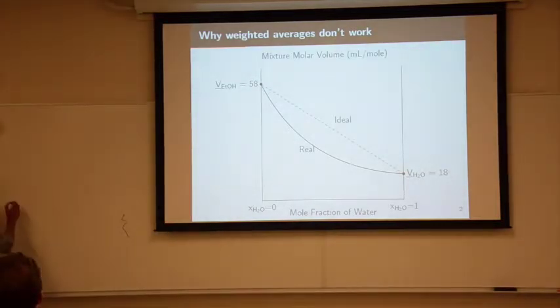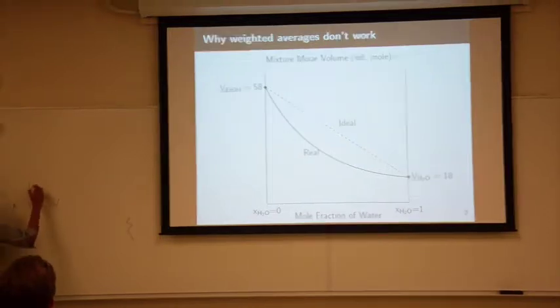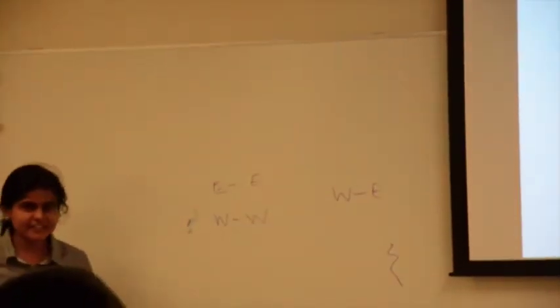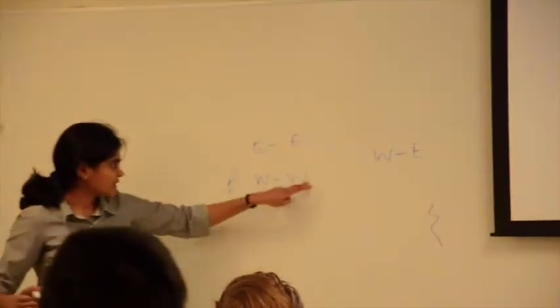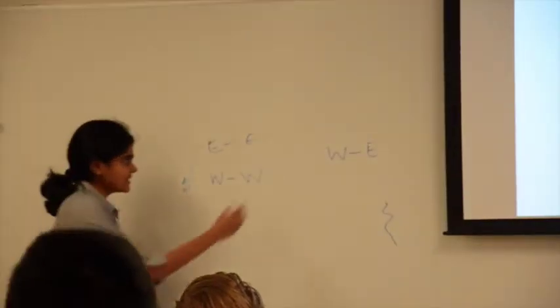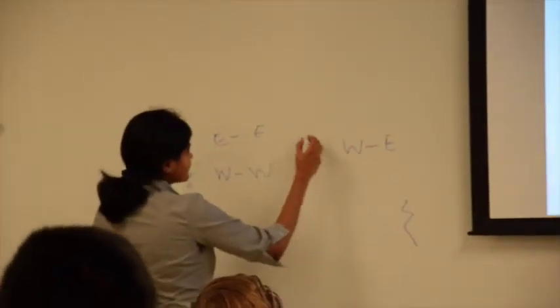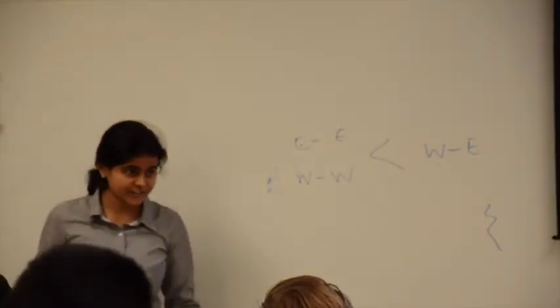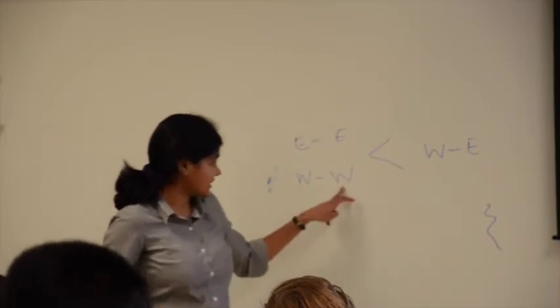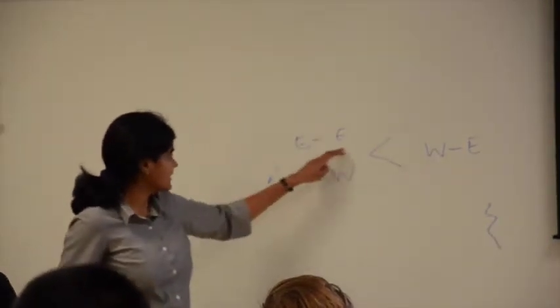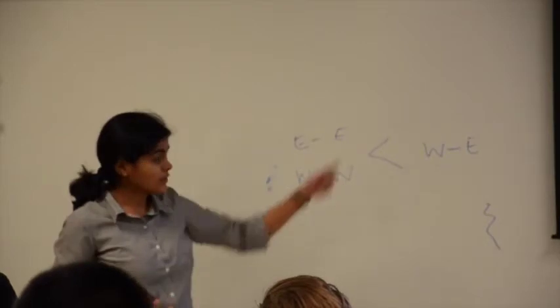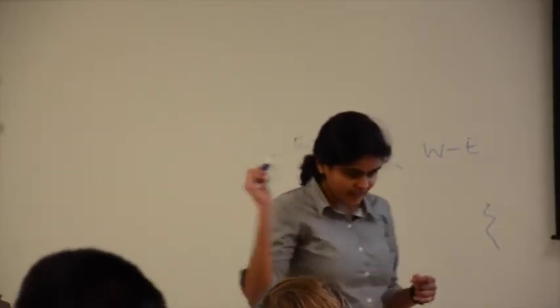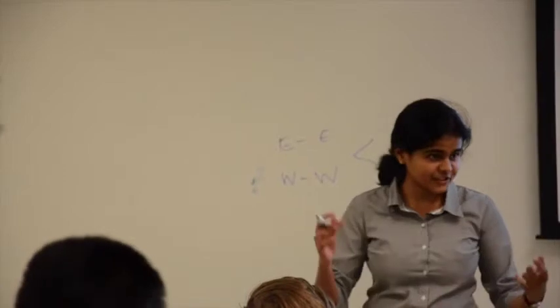What's actually happening with ethanol and water is you have beautiful hydrogen bonding going on between them, so they pack more efficiently as a mixture compared to pure substances. Water-ethanol interactions are much stronger than water-water and ethanol-ethanol interactions. That's why the volume shrinks.